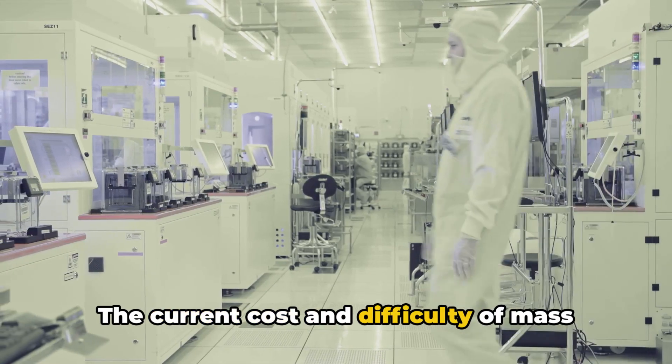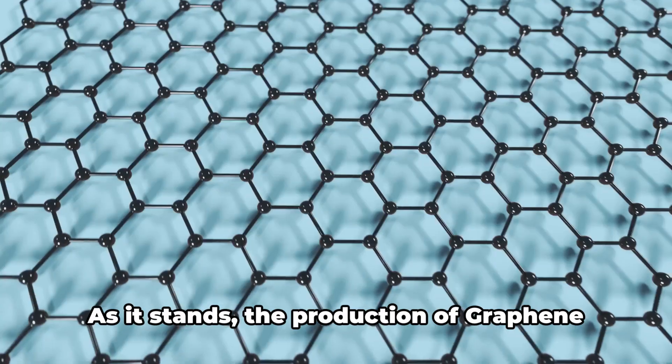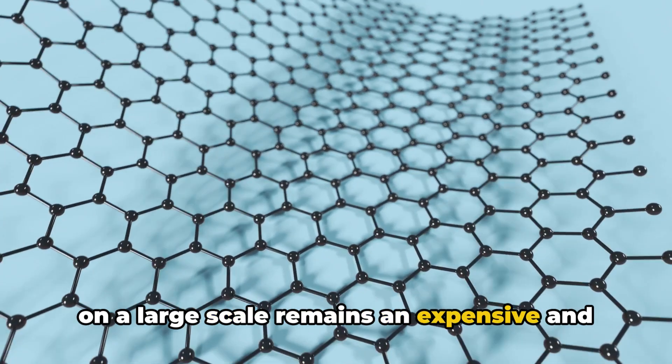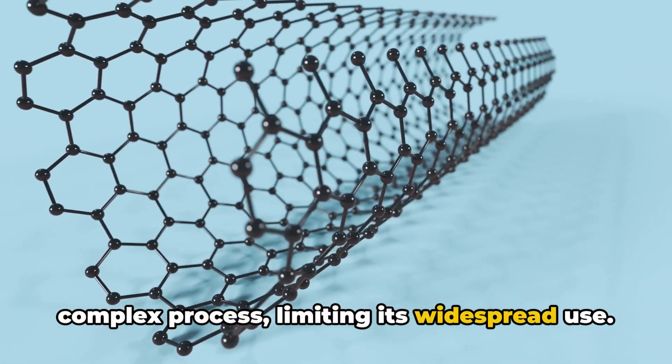The current cost and difficulty of mass production also pose substantial hurdles. As it stands, the production of graphene on a large scale remains an expensive and complex process, limiting its widespread use.